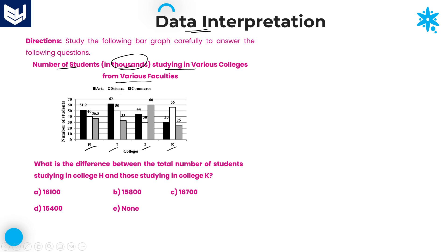The various faculties are arts, science, and commerce. Each and every value provided in the graph is in terms of thousands, meaning whatever value is given, you need to multiply it with 1000. For example, 51.2 is given for arts from college H, so you need to multiply 51.2 with 1000 to get the exact value. Based on this information, we need to solve the questions from this diagram.